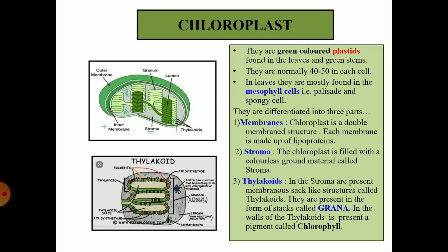Let us study what the chloroplast is. Chloroplast is a plastid which is green in color. It is found in the leaves and green stems. They are normally 40 to 50 in each cell. In leaves, they are most abundant in the mesophyll cells, that is the palisade and the spongy cells, and they are more in the palisade cells than the spongy cells.